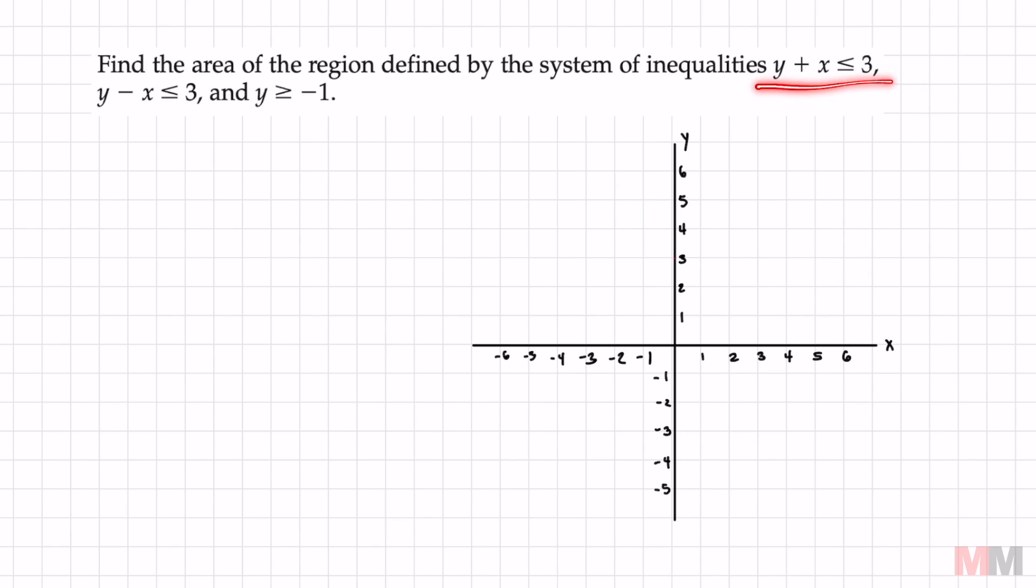We're going to graph all three of these systems of inequalities on the same coordinate plane. They're going to have a shaded region that they have in common which is going to make a shape and then we will find the area of that shape.